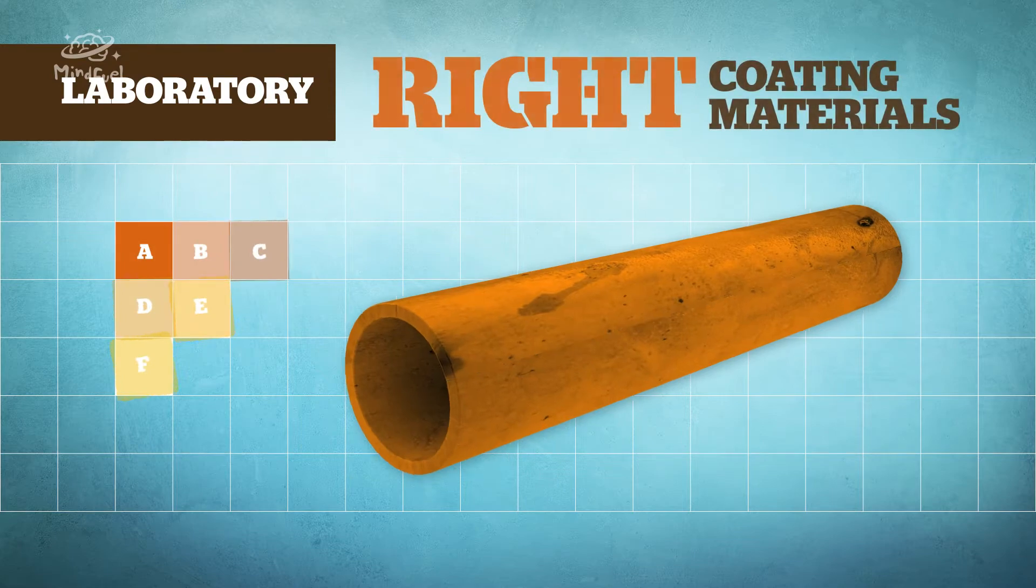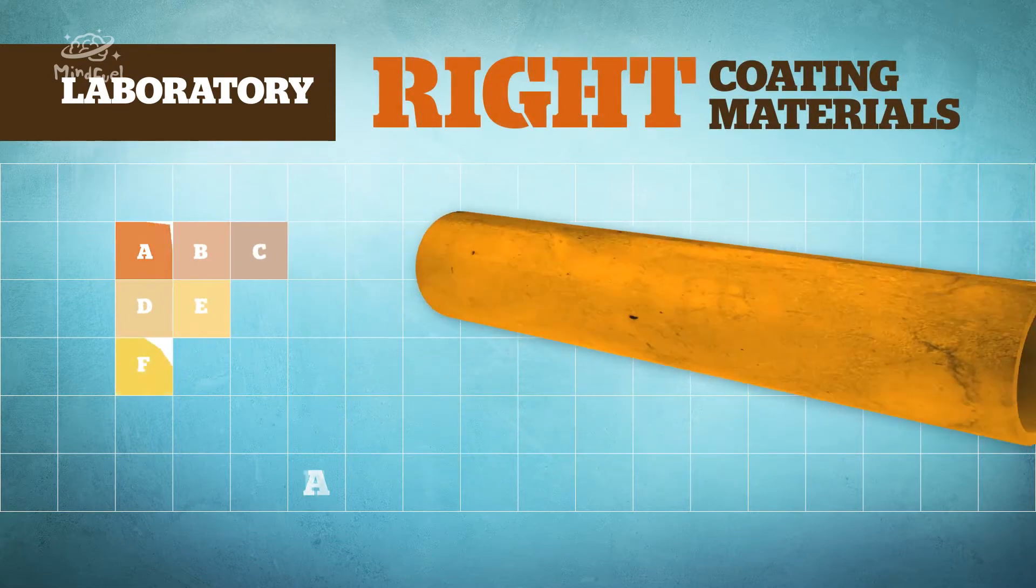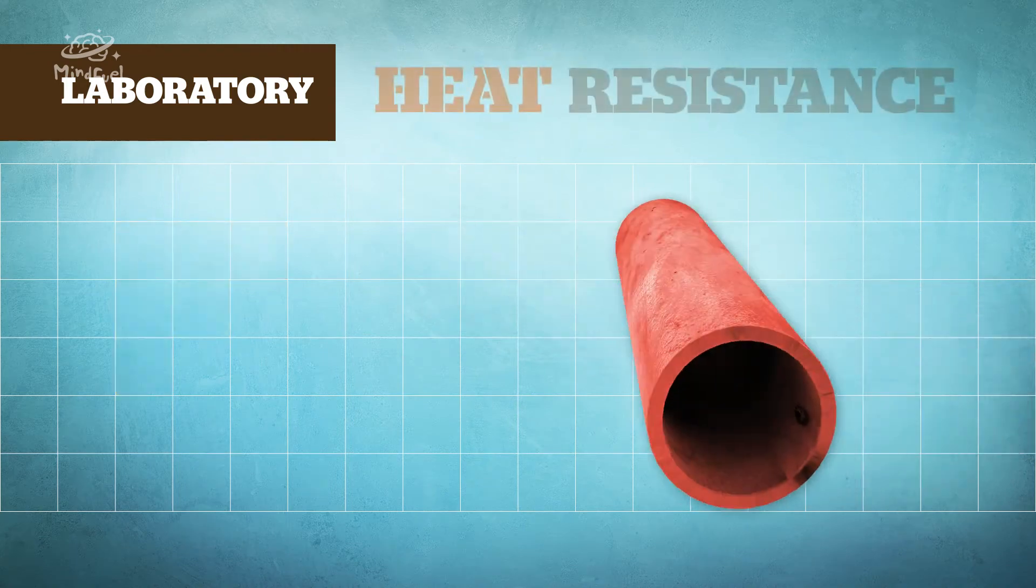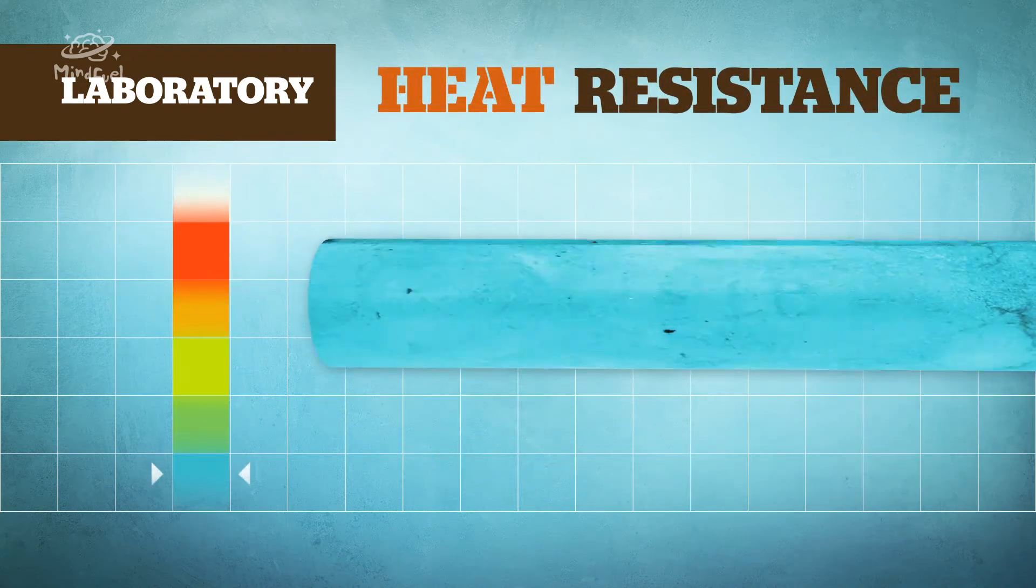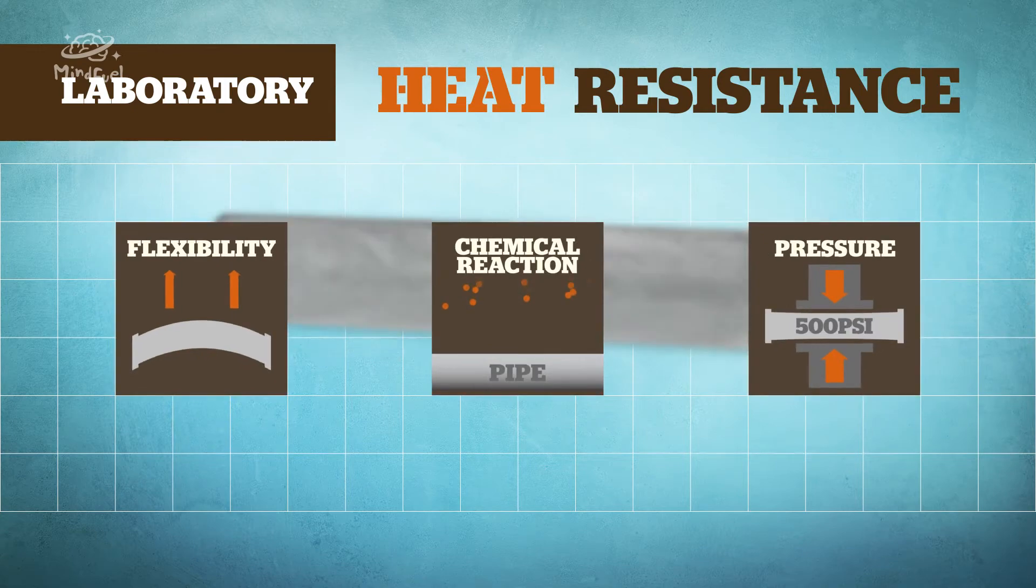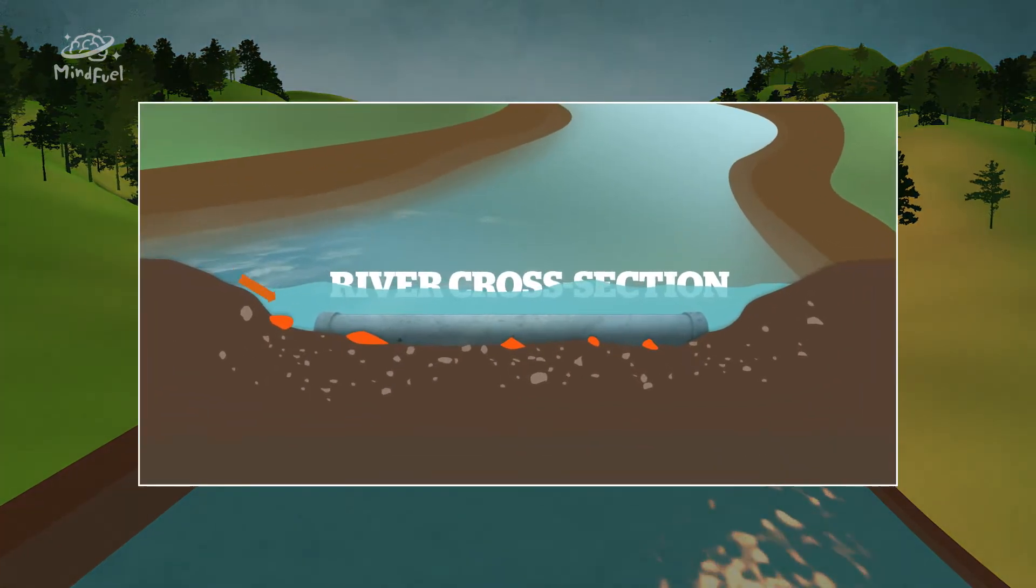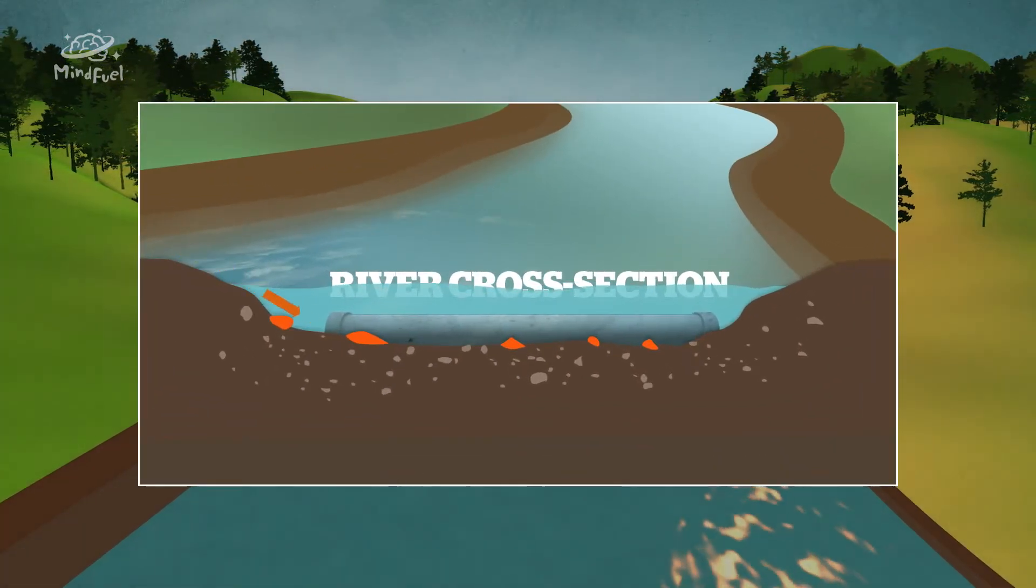This pipe has been painted already. As a specialist in coatings, I'm responsible for finding the right coating materials. I test them for things like heat resistance, flexibility, and resistance to chemicals and pressure. But as you can imagine, a pipe that's just been dragged underneath a riverbed may have rubbed against some rocks and shed some of its protective coating.